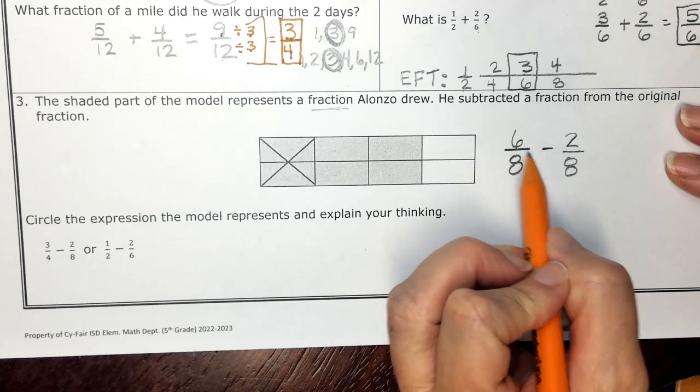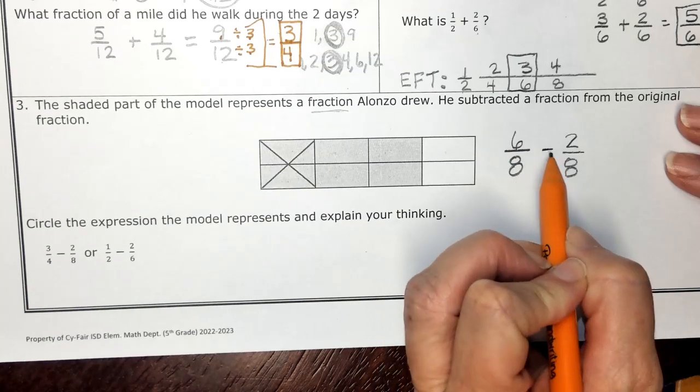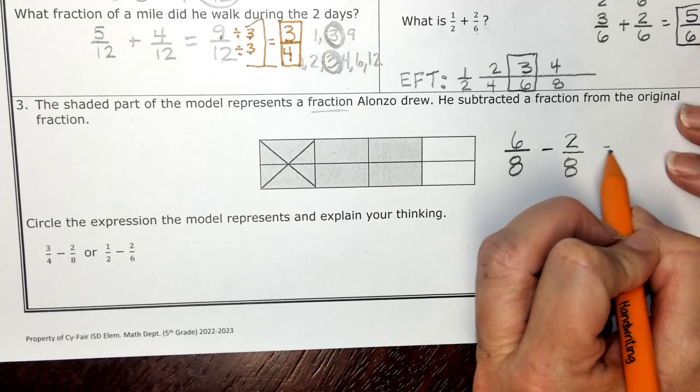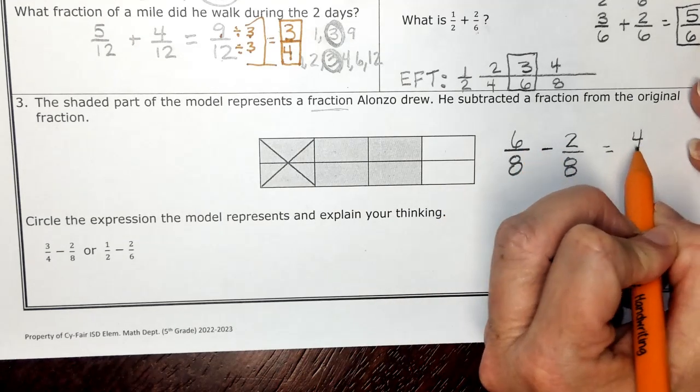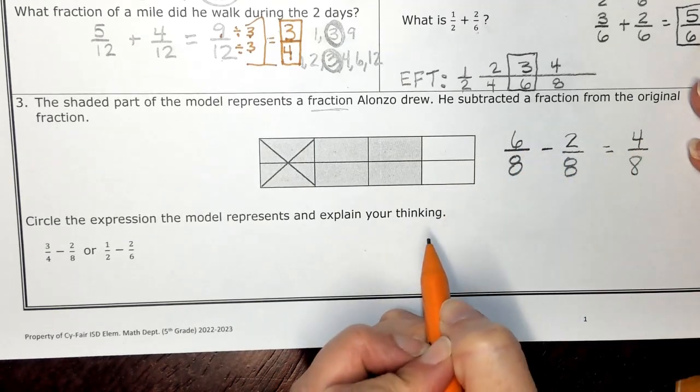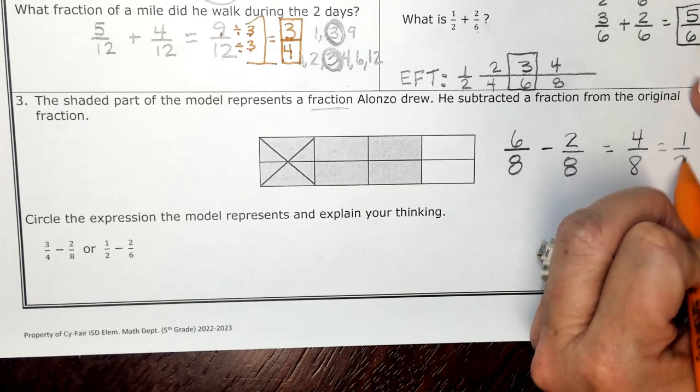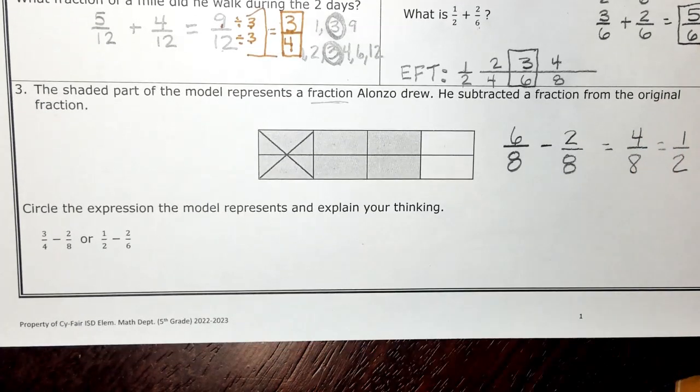And so when I think about six eighths minus two eighths, that makes sense because then I would get four eighths. And that answer is about one half because we know four is half of eight.